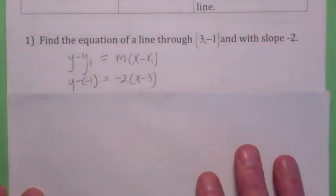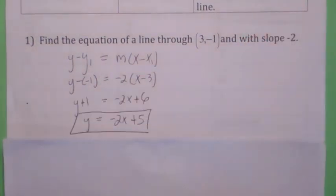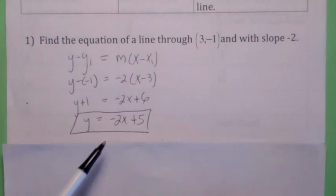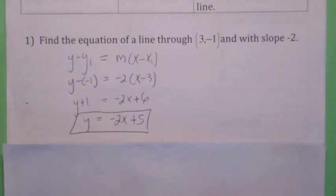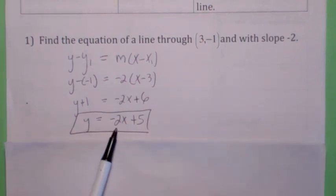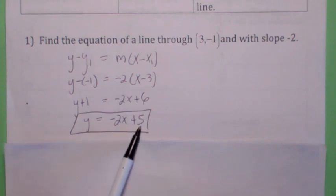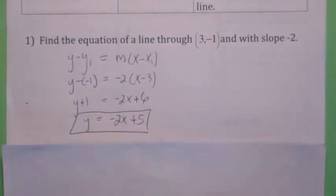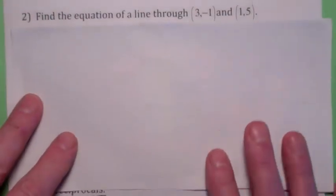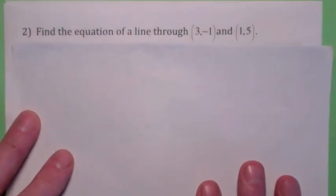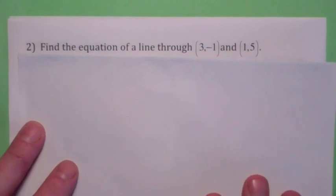Then all you have to do is solve for y. We typically solve for y because when you have a linear equation solved for y, you can tell the slope — say negative 2 — and the y-intercept — say 5. It's also easy to graph. So remember, in general, the information you need to find the equation of a line is the point and the slope.